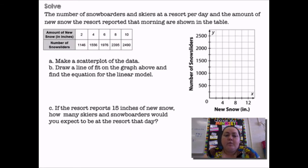Solve: The number of snowboarders and skiers at a resort per day and the amount of new snow the resort reported that morning are shown in the table. Make a scatter plot of the data. So if you see my scatter plot, I have on my x-axis the amount of new snow in inches. On my y-axis, I have the number of snow sliders, so either snowboarders or snow skiers.